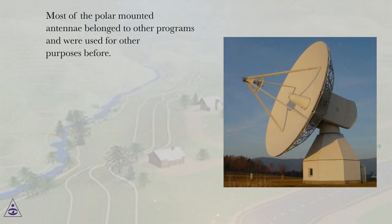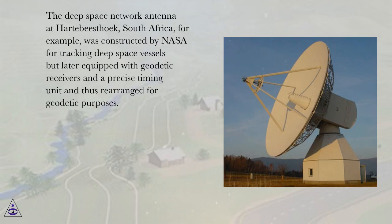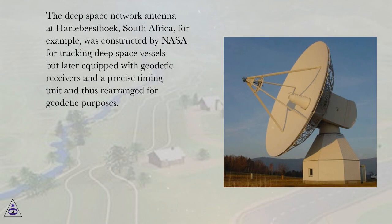Most of the polar-mounted antennae belonged to other programs and were used for other purposes before. The deep space network antenna at Hartebeesthoek, South Africa, for example, was constructed by NASA for tracking deep space vessels but later equipped with geodetic receivers and a precise timing unit, and thus rearranged for geodetic purposes.